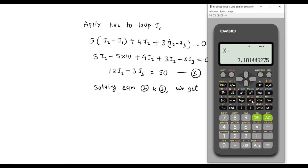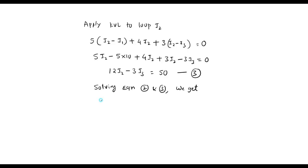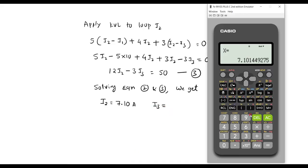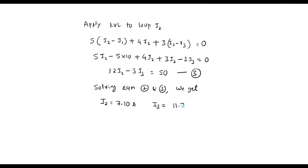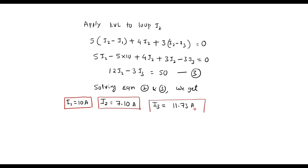For equation 3, coefficient of I2 is 12, coefficient of I3 is minus 3, and the constant is 50. Solving gives I2 equal to 7.10 amp and I3 equal to 11.73 amp. Already I1 is calculated as 10 amp. So these are the required results: I1 is 10 amp, I2 is 7.10 amp, and I3 is 11.73 amp. Thus we have solved for I1, I2, I3 using loop analysis. Thank you for watching.